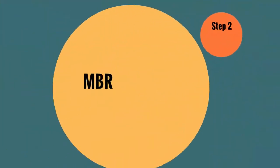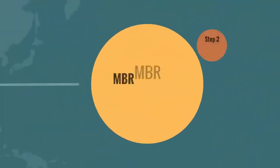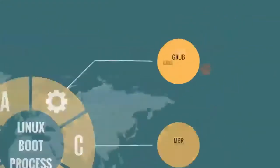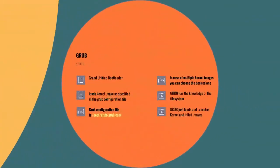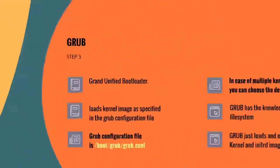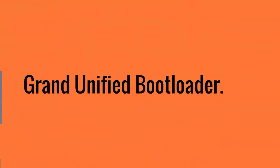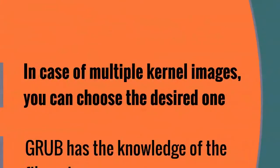MBR contains information about GRUB, or LILO in old systems. In simple terms, MBR loads and executes the GRUB bootloader. Step 3: GRUB. GRUB stands for Grand Unified Bootloader. If you have multiple kernel images installed on your system, you can choose one to be executed.